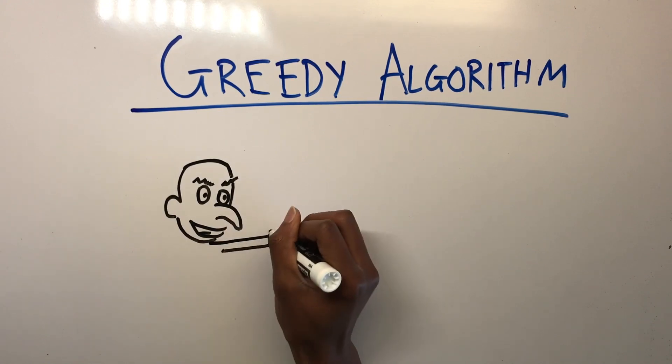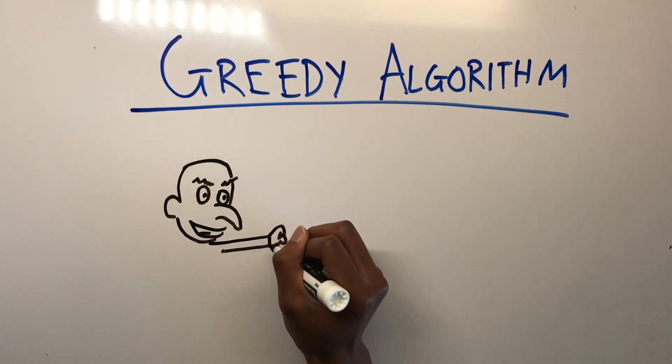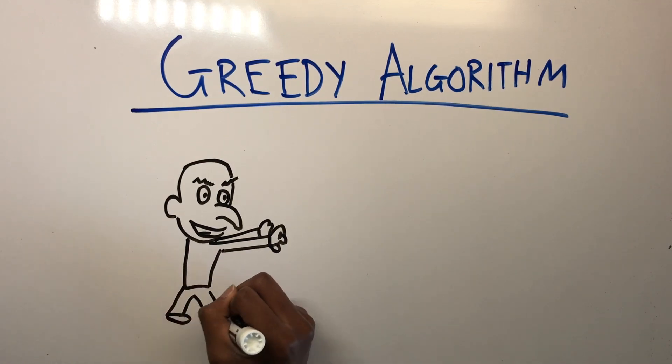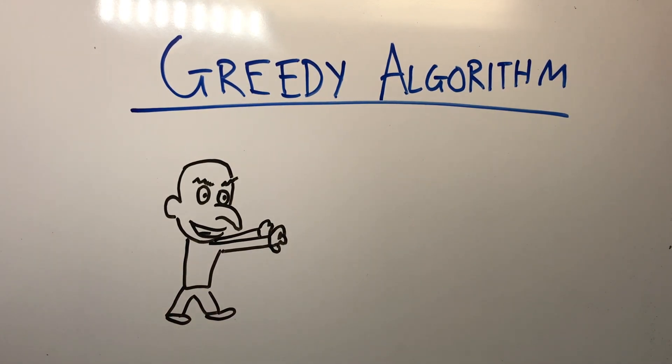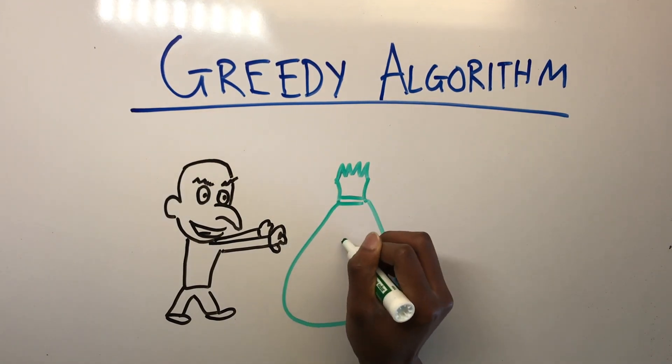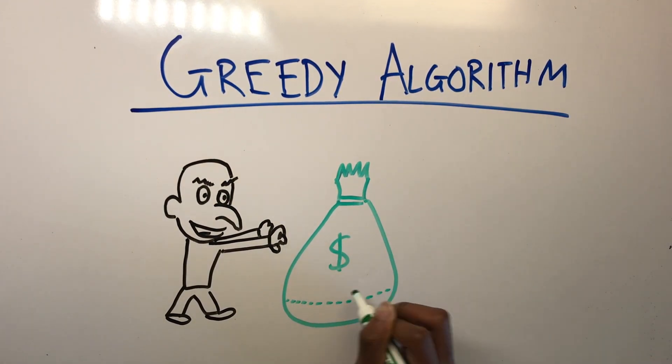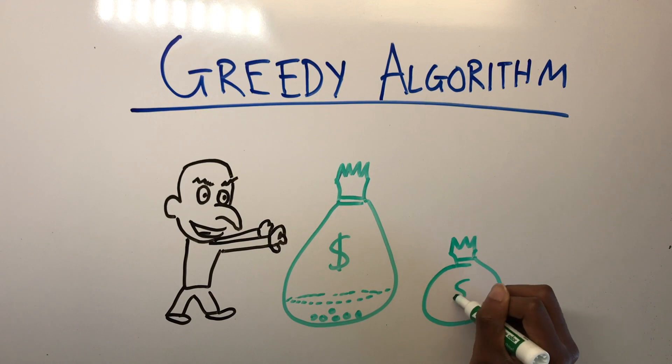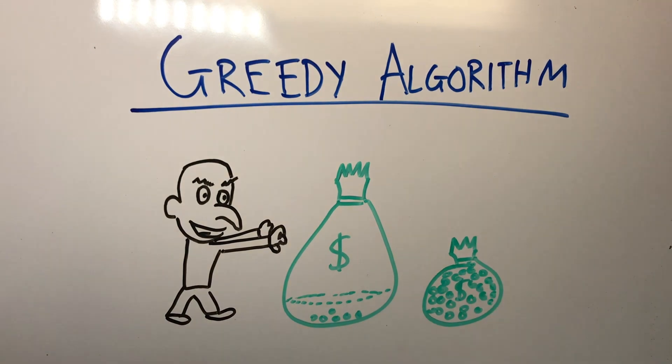One such algorithm is the heuristic algorithm, known as the greedy algorithm. The greedy algorithm earns its name from the way that it operates. It greedily traverses through the edges according to the cheapest and nearest node, without any consideration for the most effective path as a whole. It traverses through the graph based on what is locally optimal without consideration for what is globally optimal.